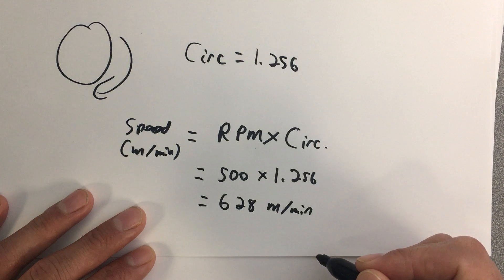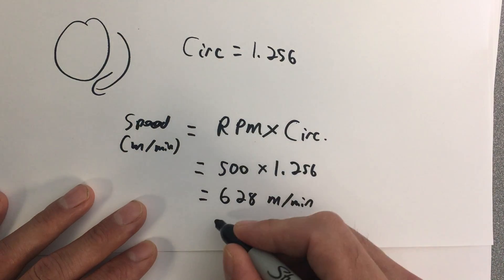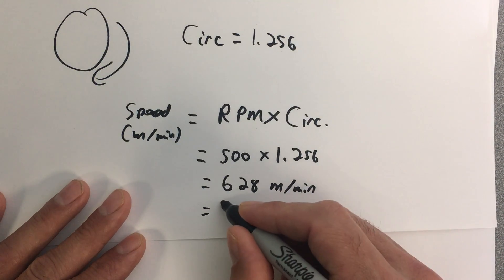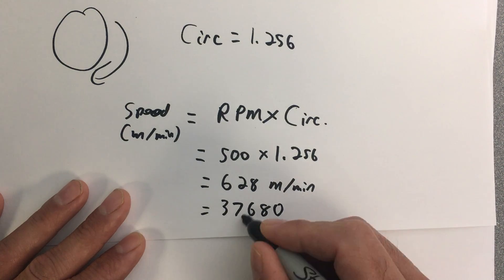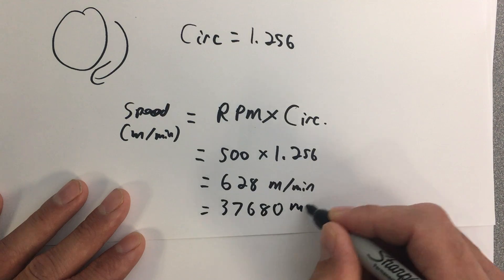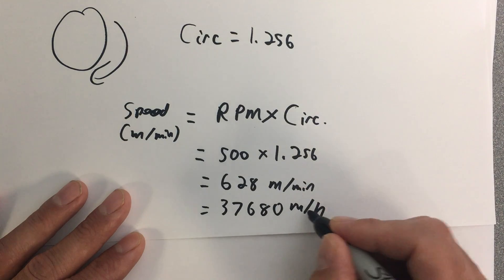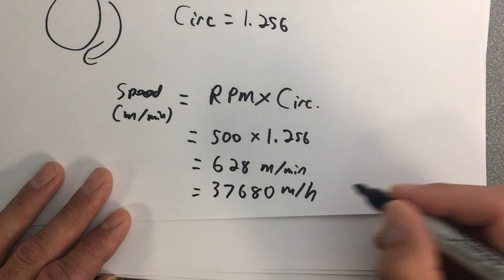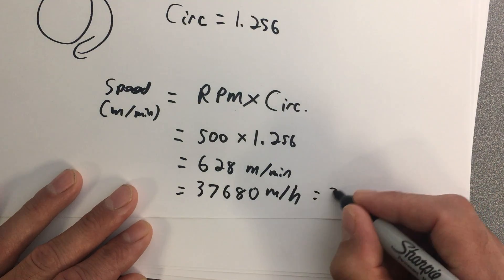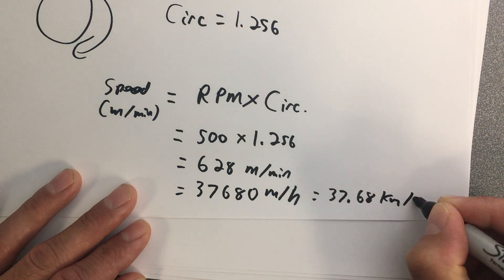If I'm going 628 meters every minute, multiply that by 60 and I'm going 37,680 meters per hour. Then dividing by 1,000 gives us 37.68 kilometers per hour.